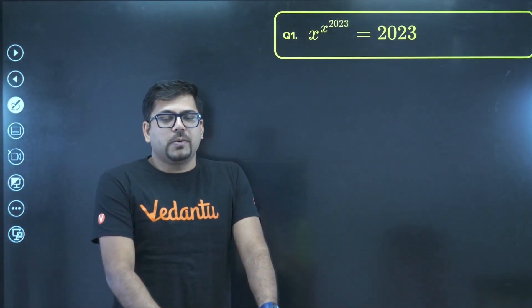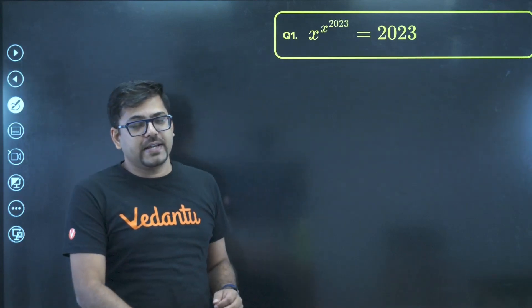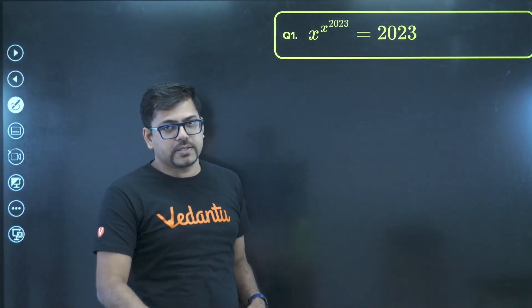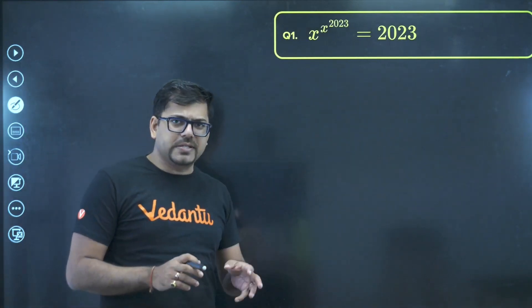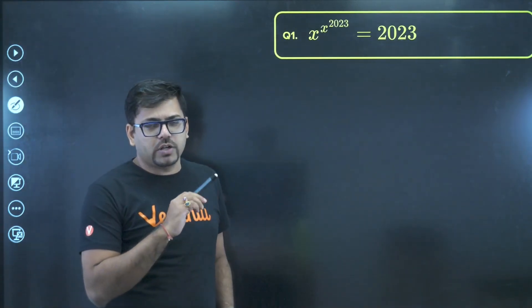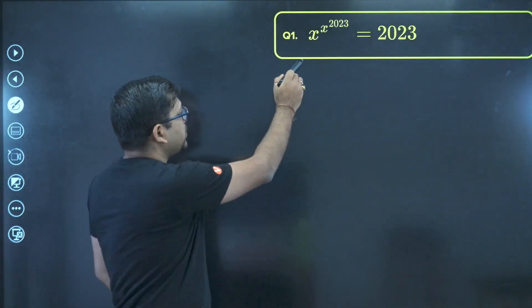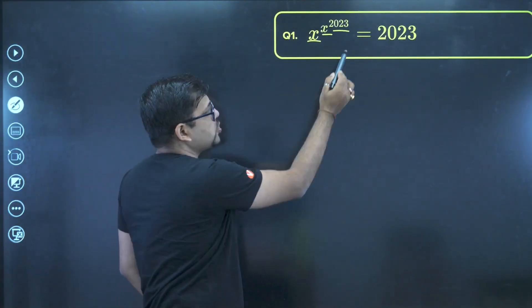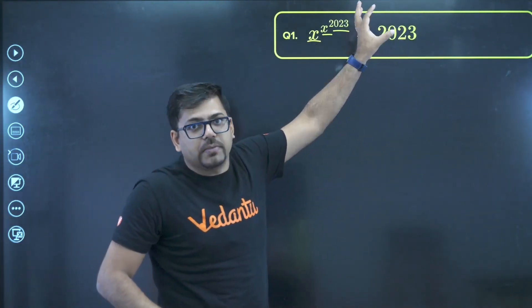Hey guys, let's talk about this problem. This is a very beautiful problem. The question says x raised to power x raised to power 2023 equals 2023. Now this question becomes a little tough because we have three terms, there are two exponents. So there is x raised to power x and raised to power 2023. And that too, that is all coming equal to a prime number.